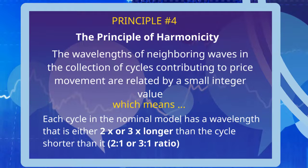So, this principle means very simply that each cycle in the nominal model has a wavelength that is either 2 or 3 times longer than the cycle that is shorter than it. That gives us a 2 to 1 or a 3 to 1 ratio.